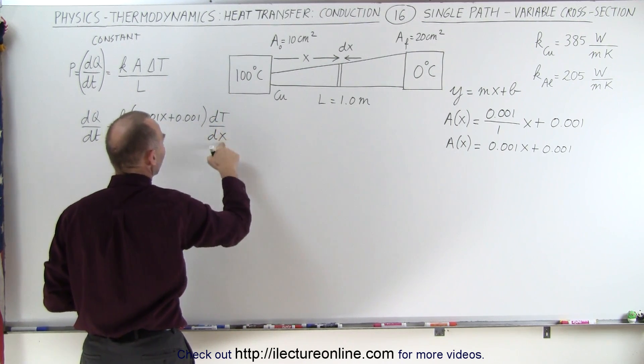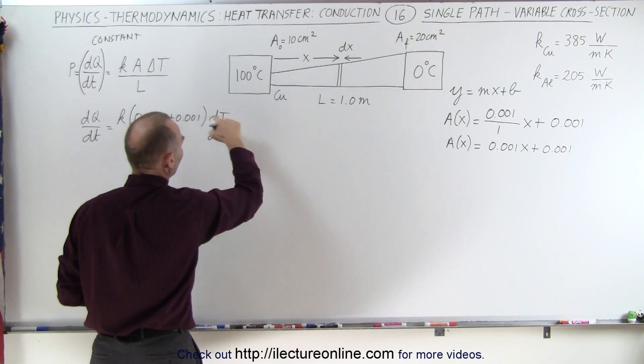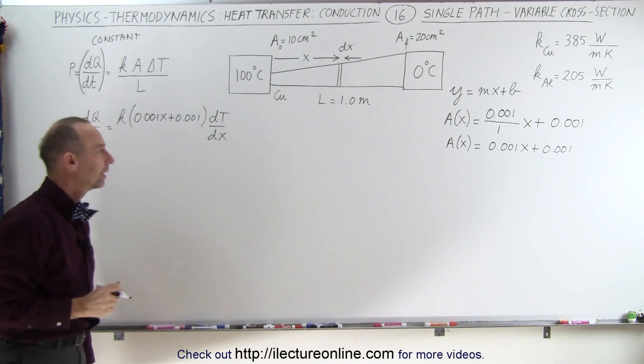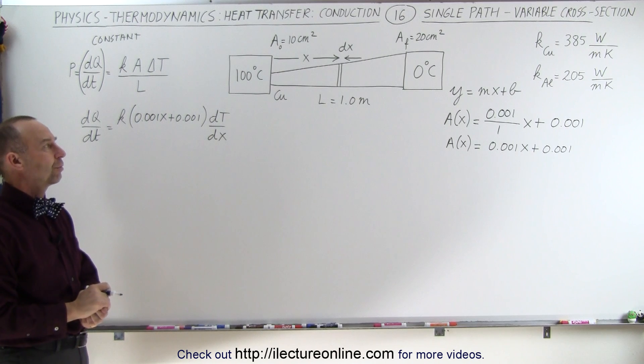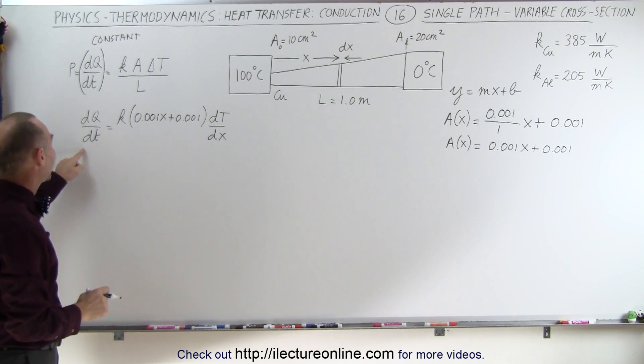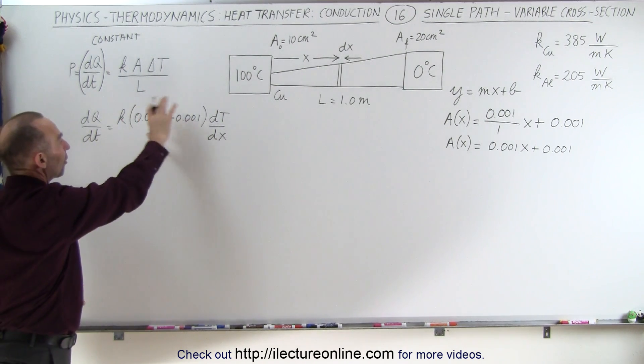Those are the two variables. X varies as you go across and the temperature varies as you go across. Now, of course, what we're trying to do is we're trying to calculate dQ/dt, so we have to solve for this equation.